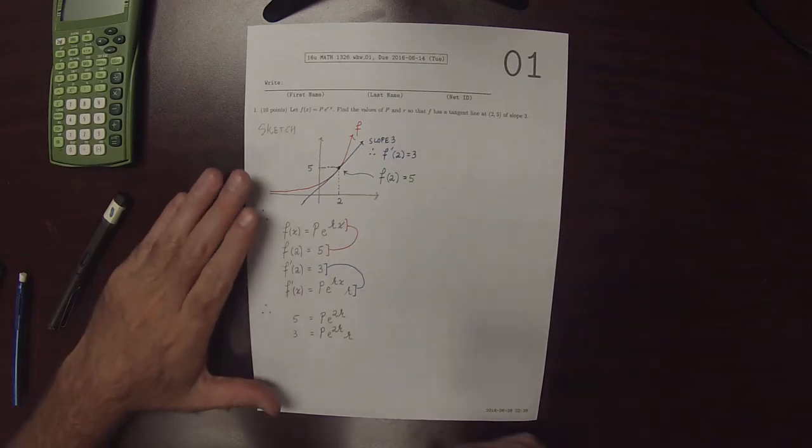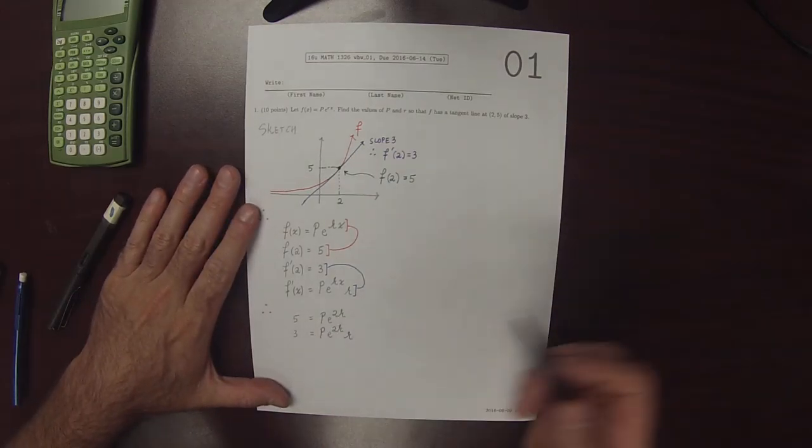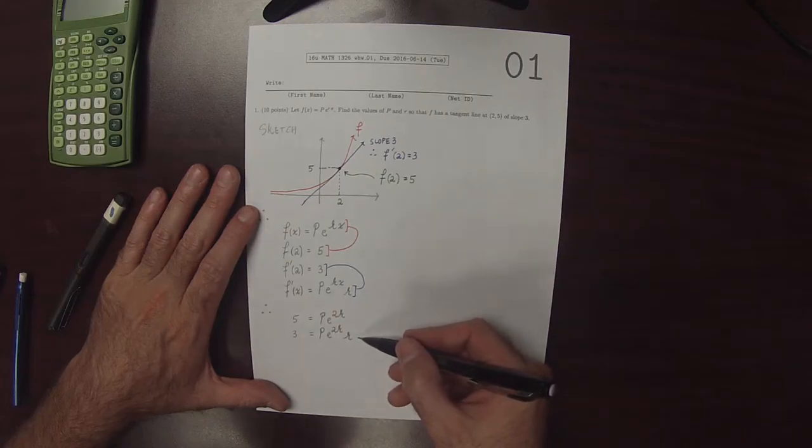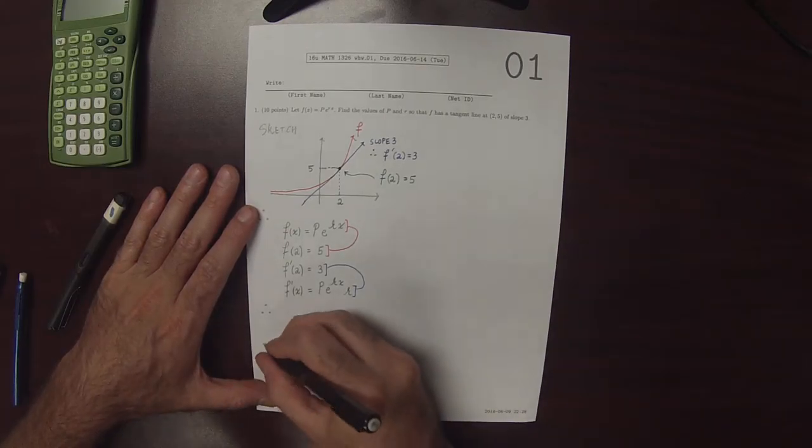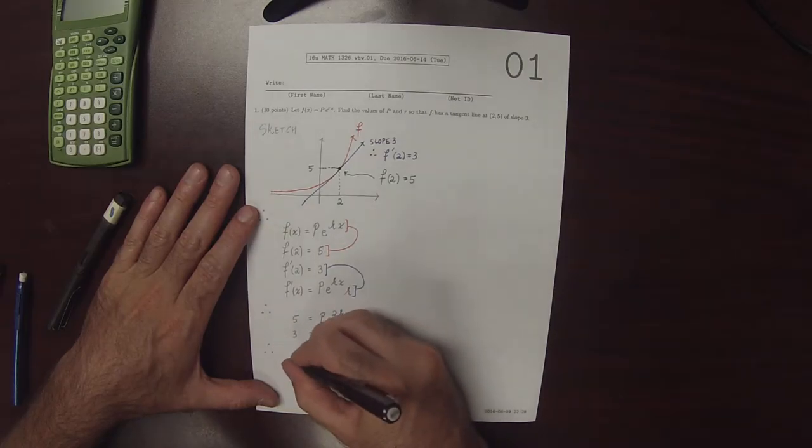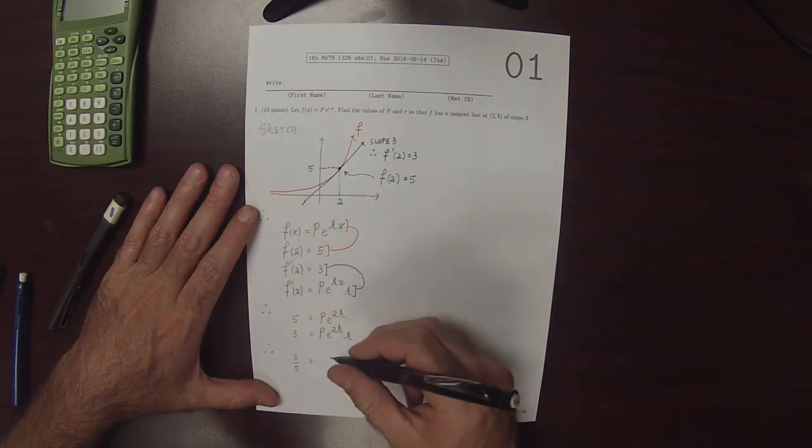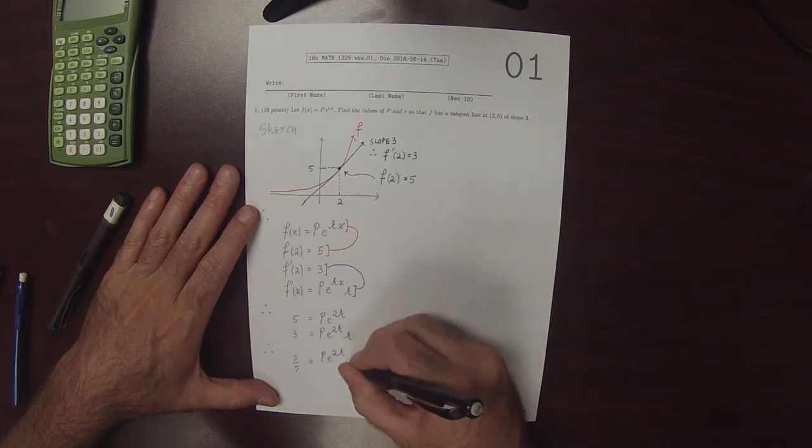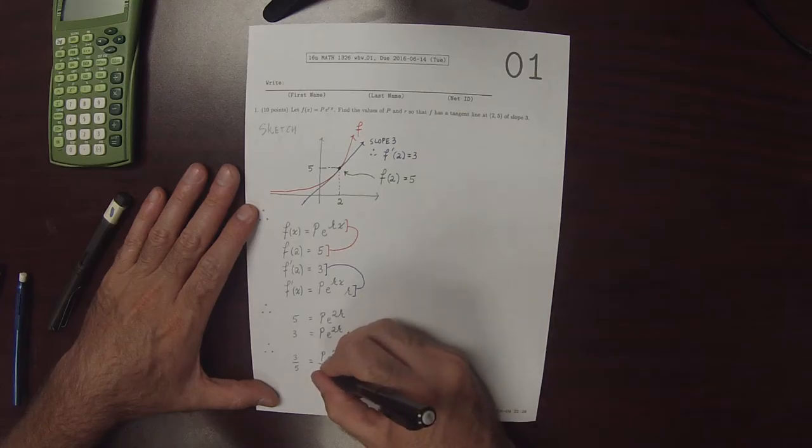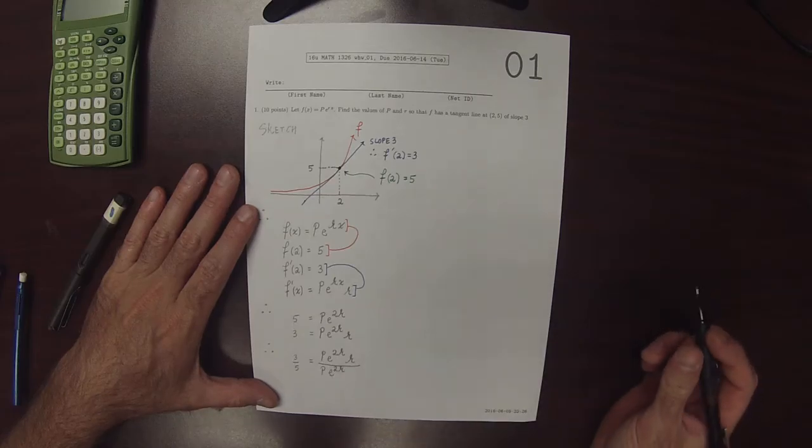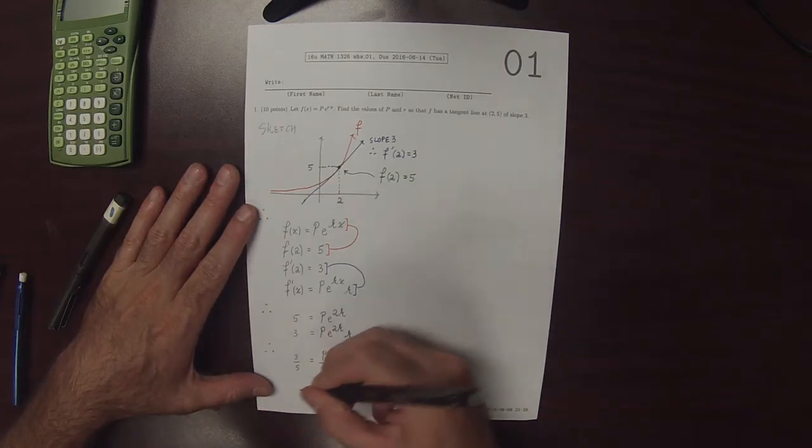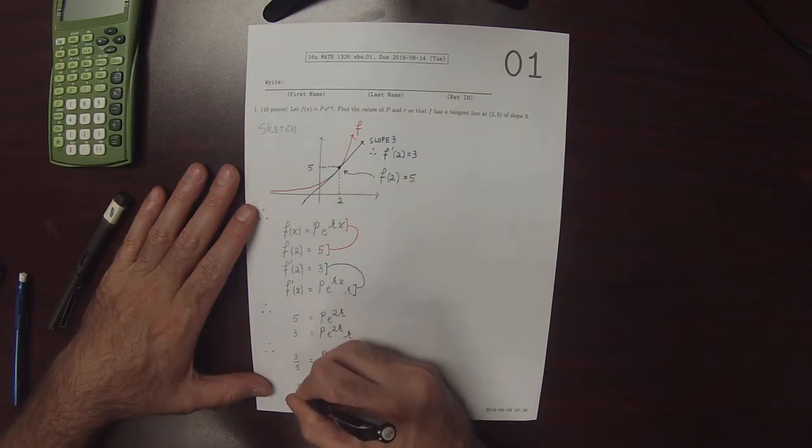And now, notice that both sides have p e to 2r in them. So I'll divide this line by this line to obtain that 3 over 5 is p e to 2r multiplied by r divided by p e to 2r. So the p's and the e to 2r's cancel. So this is 3 fifths is equal to r.